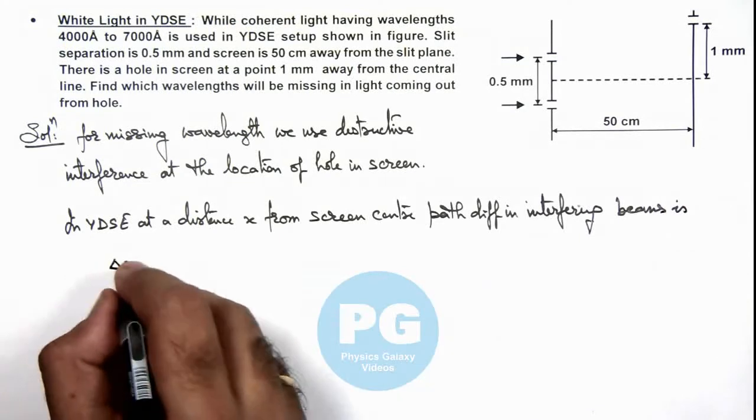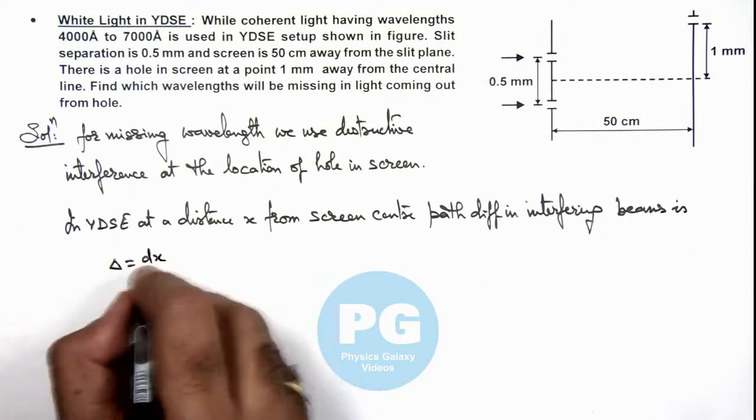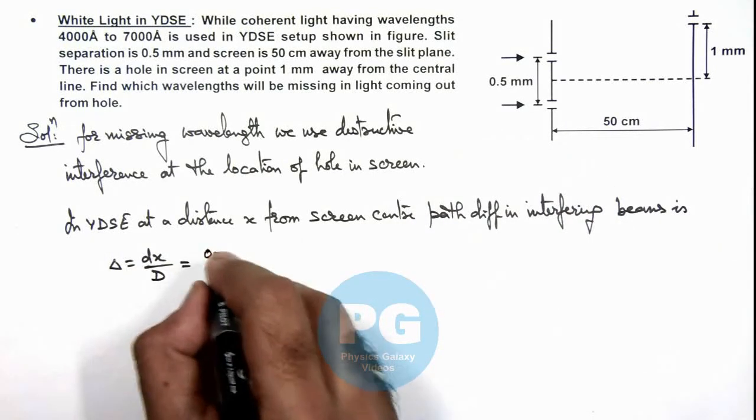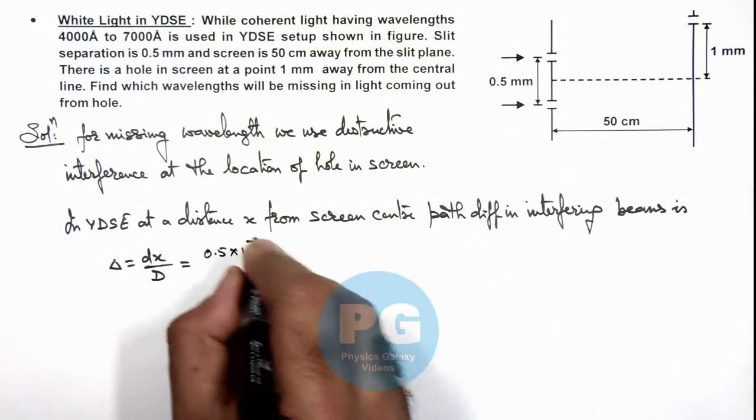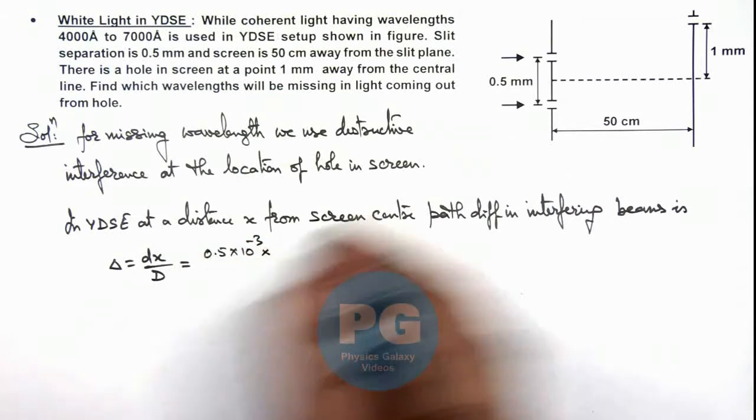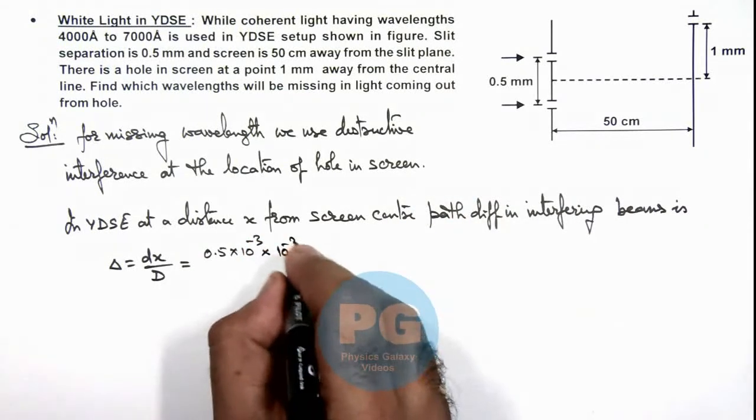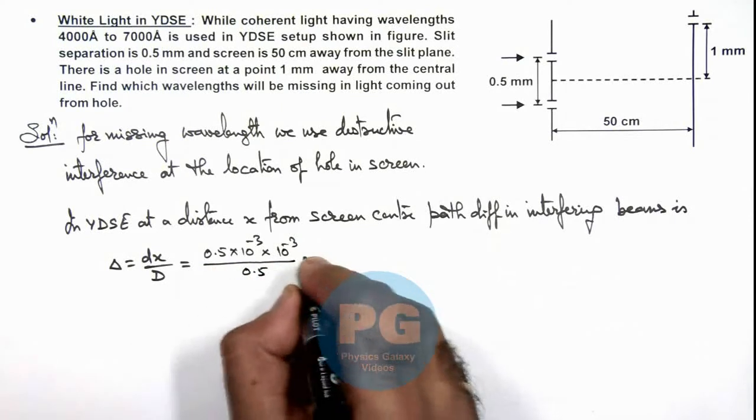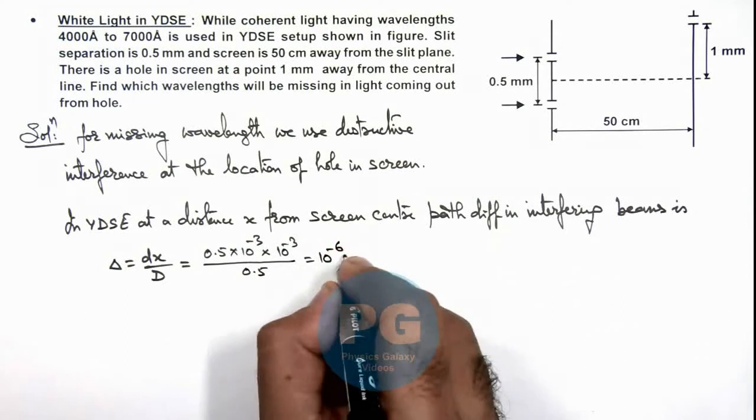In this situation if we calculate, small d is 0.5 × 10⁻³, x here is 1 mm that is 10⁻³ divided by capital D which is 0.5. So this gives us 10⁻⁶ meter.